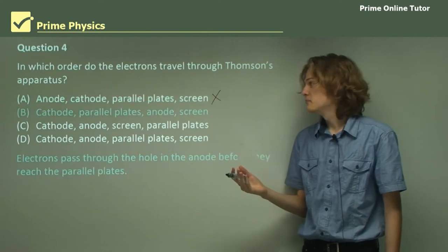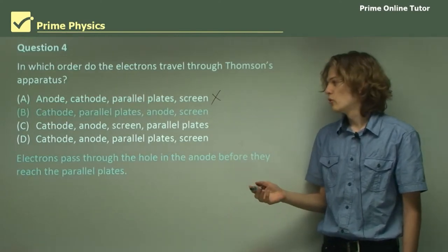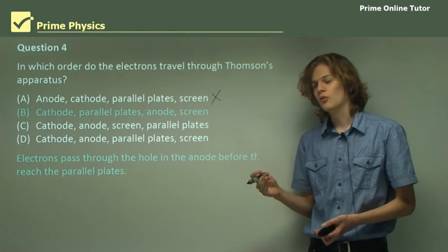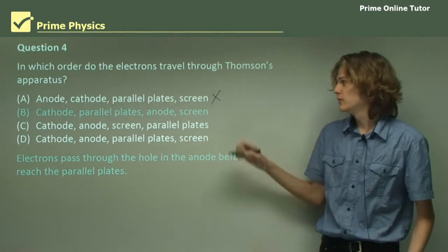What about option B then? Cathode, parallel plates, anode, screen. The electrons pass through the hole in the anode before they reach the parallel plates. Otherwise, there'd be a very wide beam, and we wouldn't be able to observe much deflection. So it can't be B.